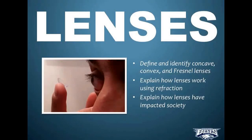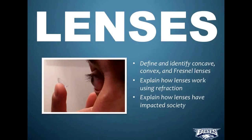Lenses help us bend light to where we want it to go. Sometimes we want light to focus on the back of our retina so that we can see clearly. Other times we want to see an image in outer space, but it's so far away that it's impossible to see without a telescope. And sometimes we just want to light something on fire. In any case, it's all about bending light to where we want it to go.